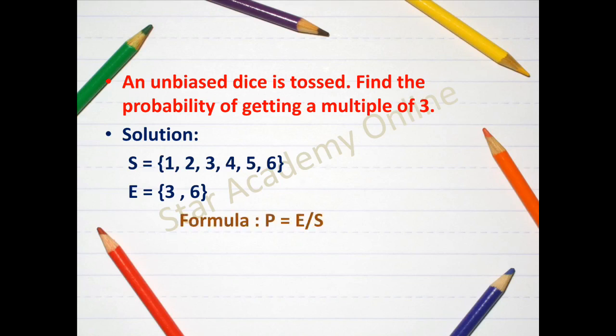Now using the formula P is equal to E over S, we are going to substitute the values, two divided by six. As it can be further simplified, we will simplify it and we get the answer as one by three.